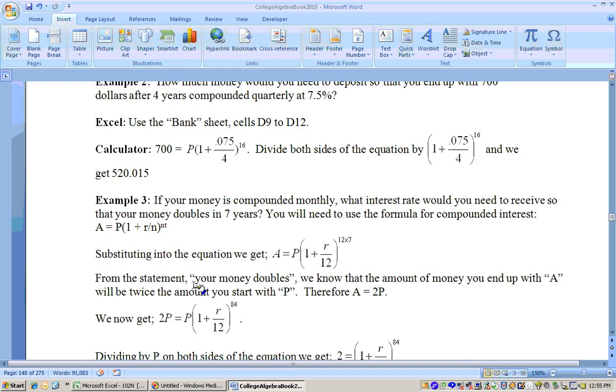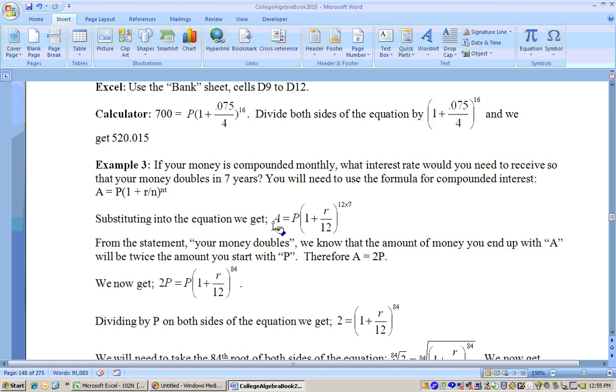Now, if you want your money to double, the interest rate that you need for $1 to double to $2 is the same interest rate that you need for $100 or $1 million to double to $2 million or $100 to double to $200. So really, it doesn't matter how much you start with, just so you end up with twice that amount. So what we can do is think of the amount that you end up with being twice the principal. So I'm just going to substitute in 2P where the A is.